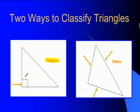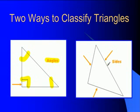Remember, angles are these things right here, so we can classify triangles by their angles. And then we can also classify them by their sides.